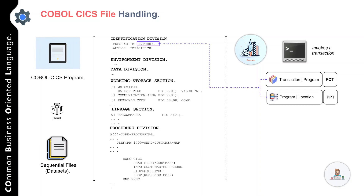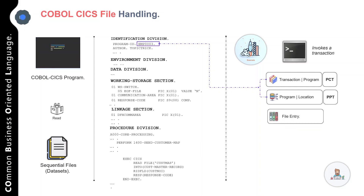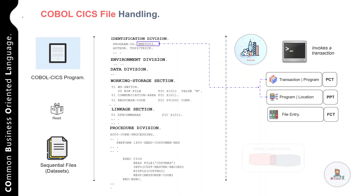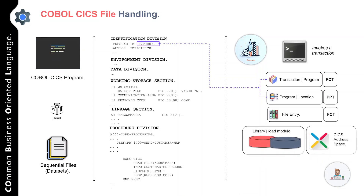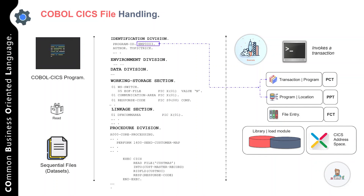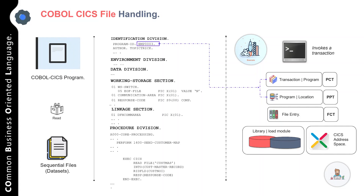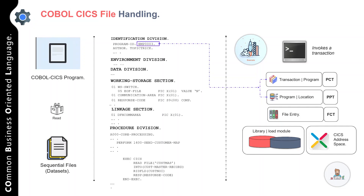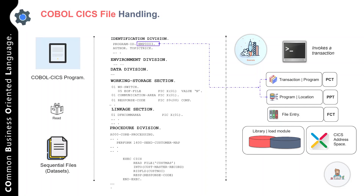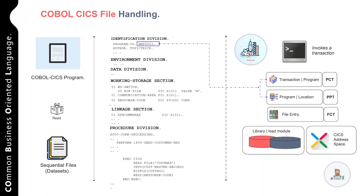The PCT includes a list of valid transaction identifiers, and each identifier is paired with a CICS program that will be loaded and executed when a transaction is invoked. Another important CICS table is the Process Program Table, or PPT, which contains a list of valid program names and tracks which programs are in storage. The last table is the FCT, which keeps track of files available to your application program. These tables are discussed here just to explain how a COBOL CICS program is designed and executed.